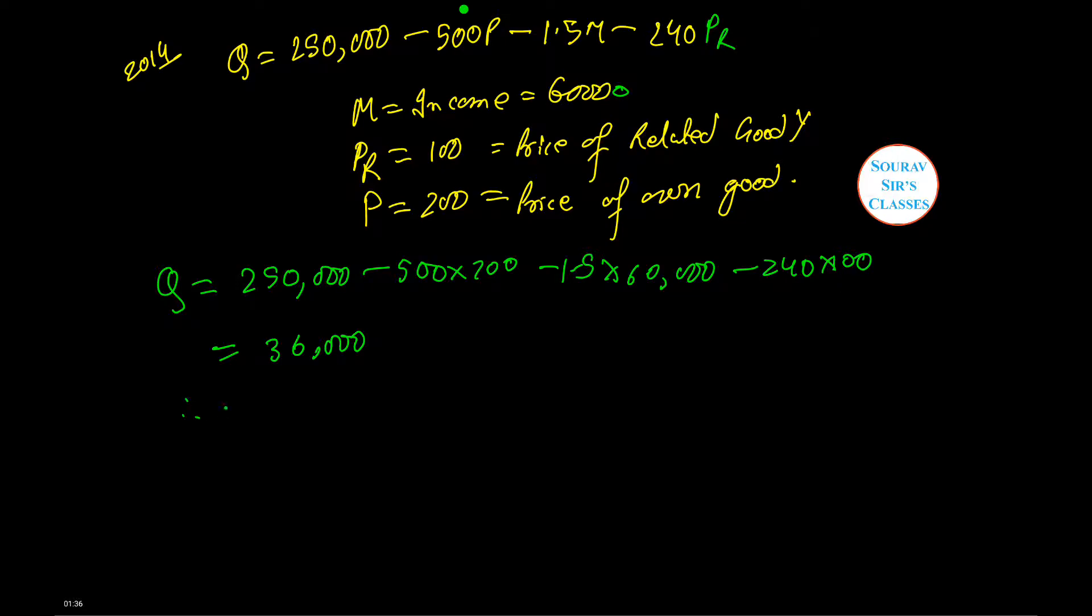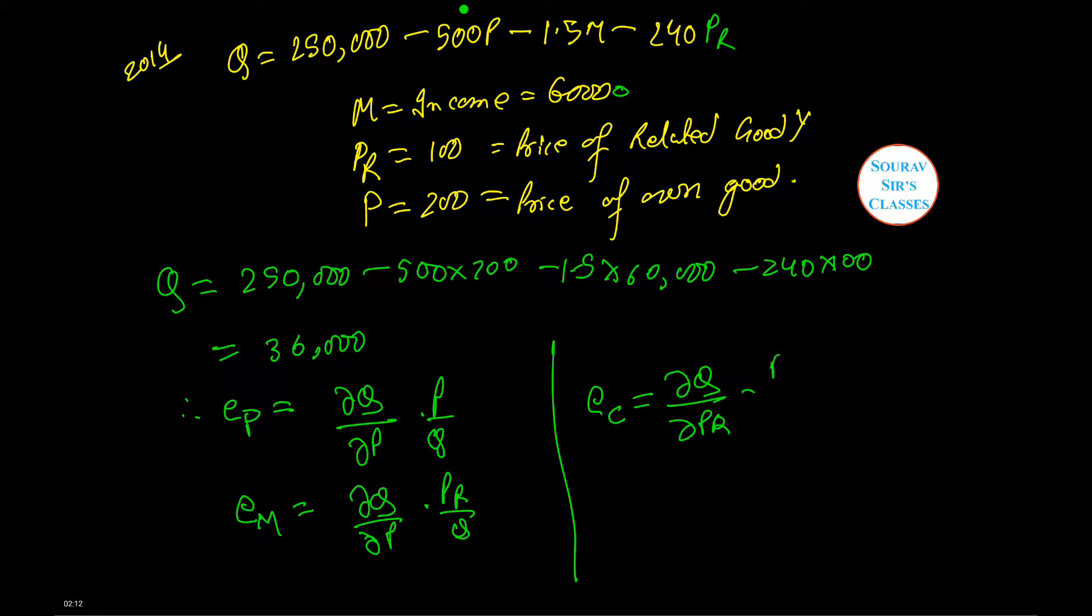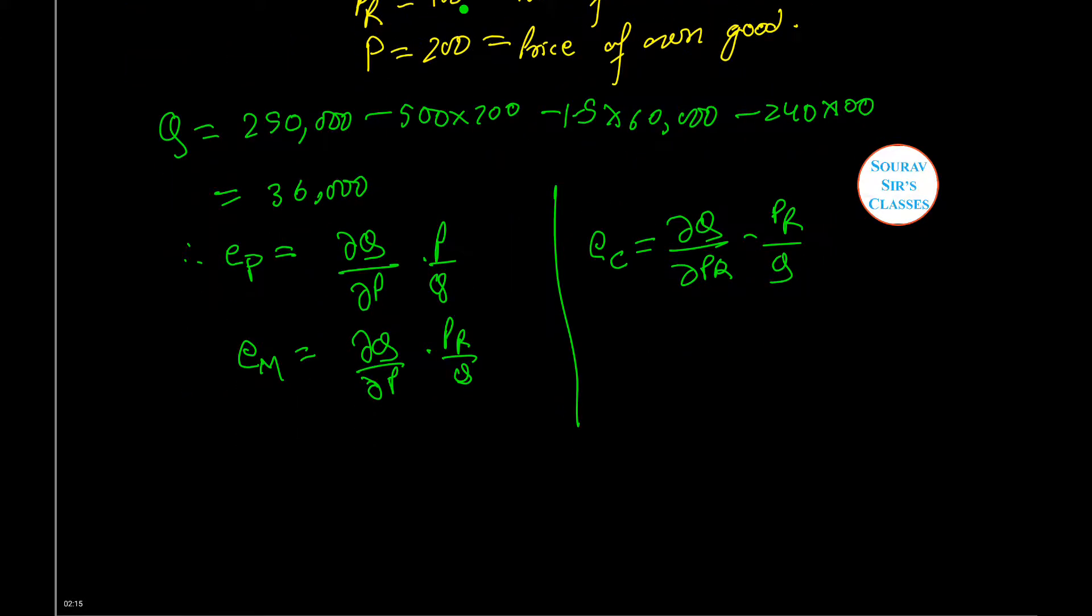Therefore, the price elasticity which is determined by EP equals partial differentiation of Q with partial differentiation of P into P by Q. The income elasticity EM equals DQ by DM into M by Q. And lastly, we have the cross price elasticity, that is EC equals DQ by DPR into PR by Q. Now let us put the values.